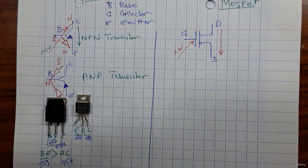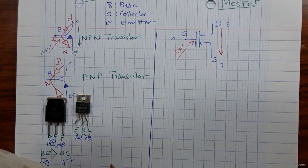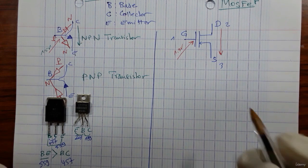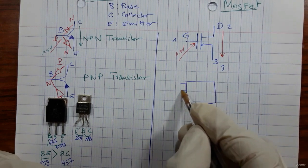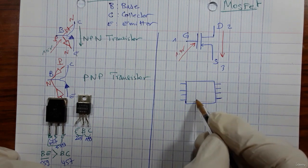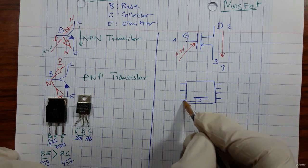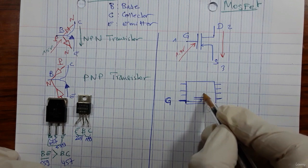Sometimes we can find another type of MOSFET with eight pins, rather than just three. This type is especially found on computer motherboards. This is the body of the MOSFET — it has four pins on one side and four pins on the other side. This is the gate here.